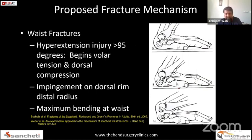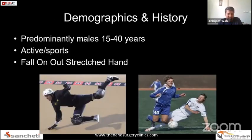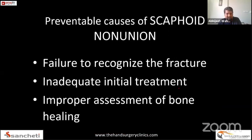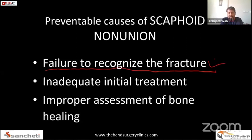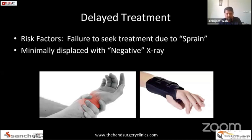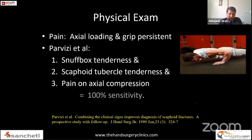The mechanism is usually a fall on an outstretched hand, typically seen in males involved in sports and outdoor activities. The most important preventable cause of scaphoid non-union is failure to recognize the fracture at the outset. Inadequate initial treatment, improper assessment of bone healing, and delayed or inadequate treatment are the most common yet preventable causes. Fresh fractures may not be evident on initial x-rays, so it is better to err on the side of over-treating these fractures.